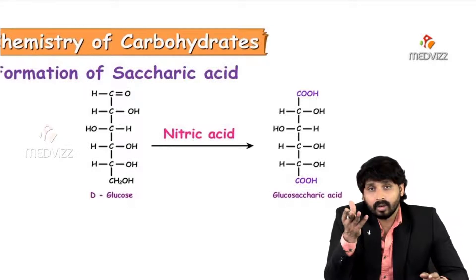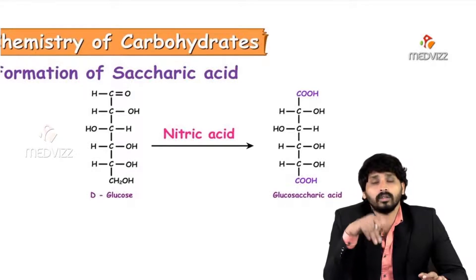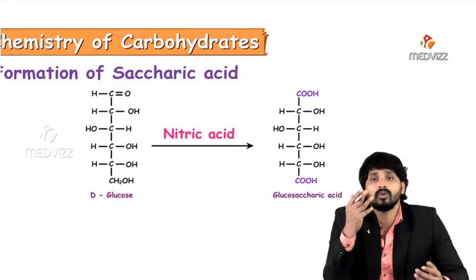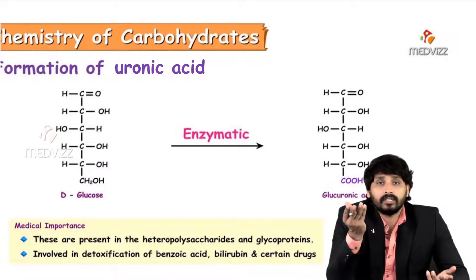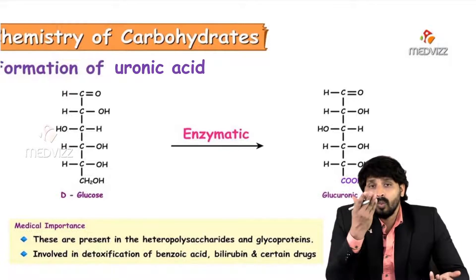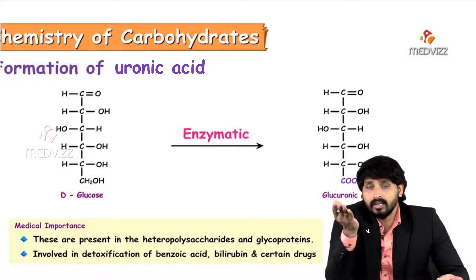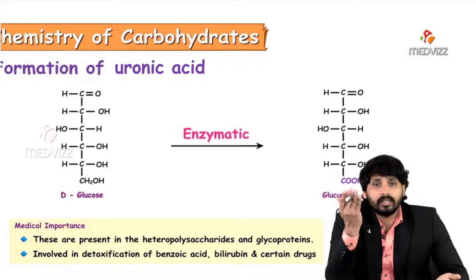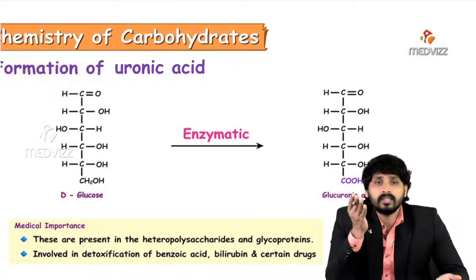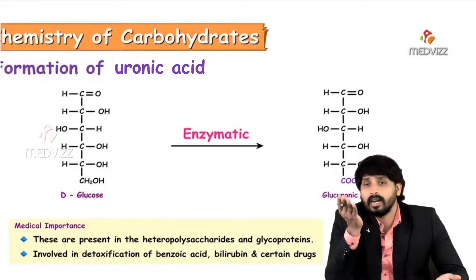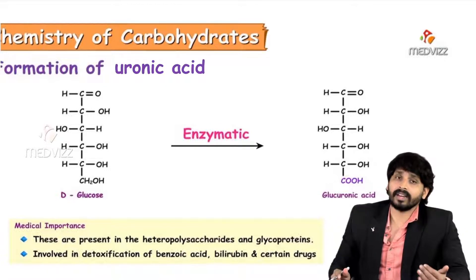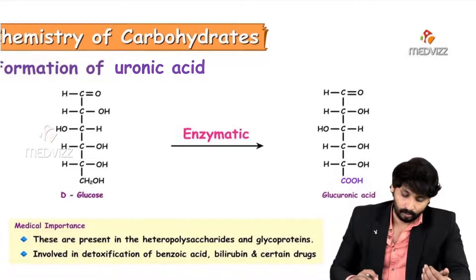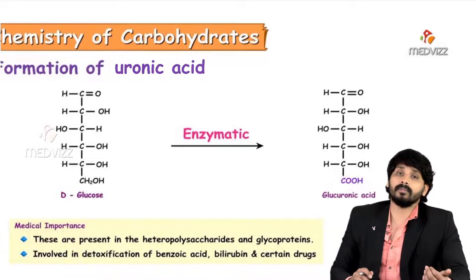When glucose is treated with nitric acid, both the first and sixth carbons undergo oxidation to form glucosaccharic acid (with COOH at both ends). In uronic acid formation, an enzymatic reaction in the body causes the penultimate carbon to undergo oxidation, forming glucuronic acid. Glucuronic acid is part of many heteropolysaccharides and glycoproteins, and plays a major role in detoxification — specifically in conjugation mechanisms of bilirubin metabolism and certain drug conjugations.